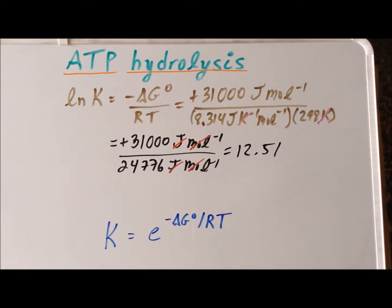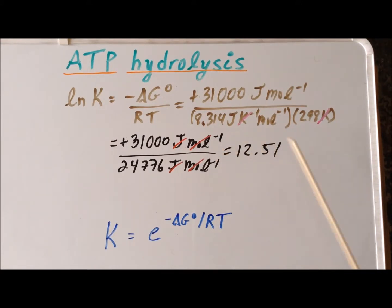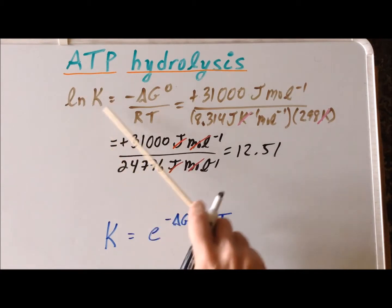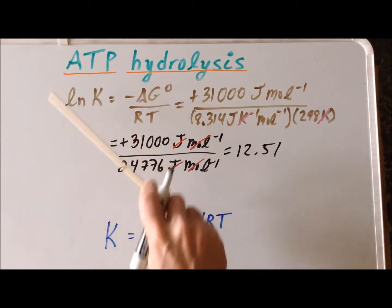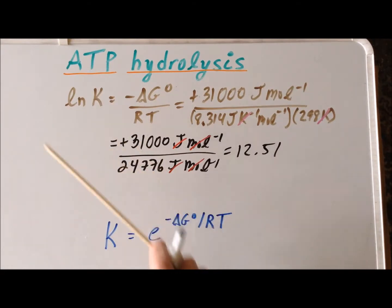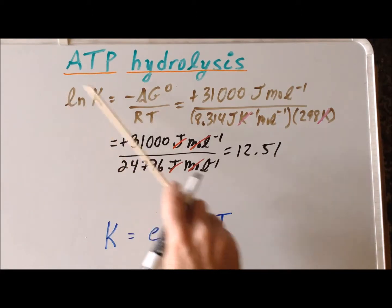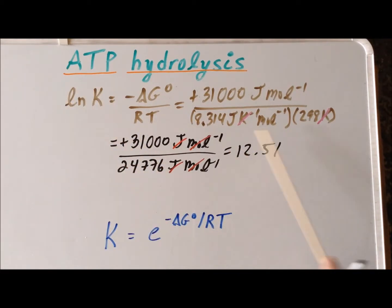Note that this result must be dimensionless — when taking a logarithm, the argument must be unitless. So the natural log of the equilibrium constant is equal to 12.51.